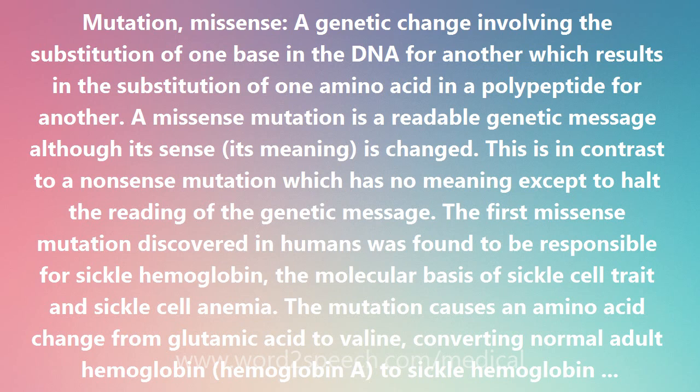The discovery of the sickle missense mutation was made by Vernon Ingram at MIT. In 1956, Dr. Ingram noted that the difference between hemoglobin A and hemoglobin S lay in a single tryptic peptide, and then in 1959 reported the precise nature of the missense mutation.